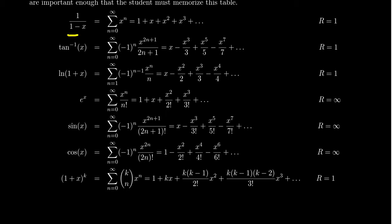From this geometric series formula, we can actually handle every rational function, because polynomials are their own Taylor series. If you have a rational function, you can do a partial fraction decomposition — start with division, divide out the polynomial part, then do your partial fractions on the proper fraction. You could have a repeated power like 1 over 1 minus x squared; in that situation, you can take the derivative of the geometric series to find the power series. We saw examples like that in section 11.9 of James Stewart's calculus textbook.